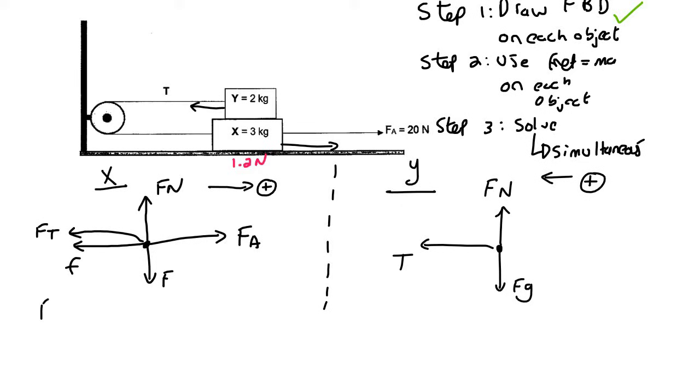When we use F net equals to ma for this one, all of the forces that are causing positive acceleration are going to be FA, then we're going to say minus FT and then minus F, and then that's going to be equal to ma.